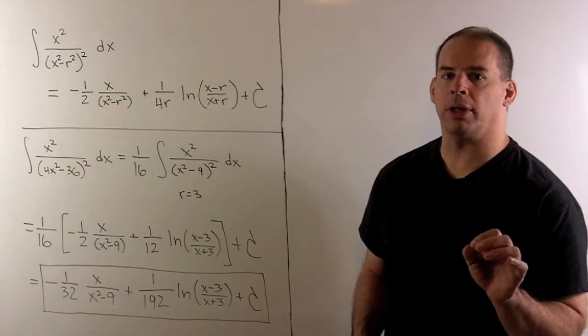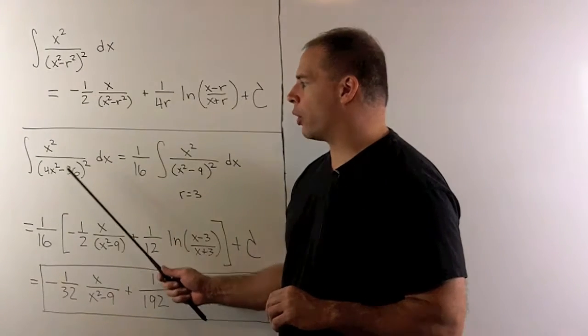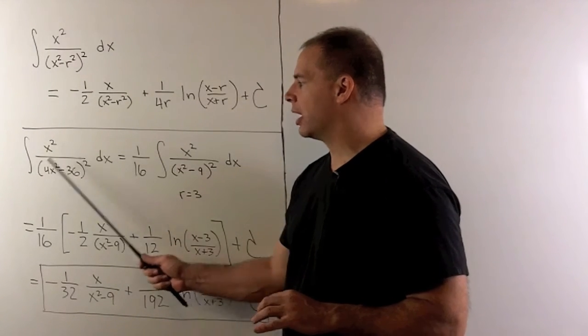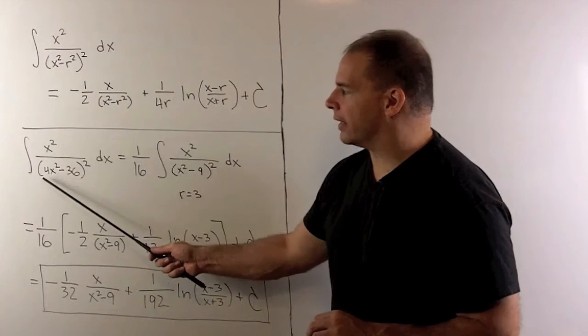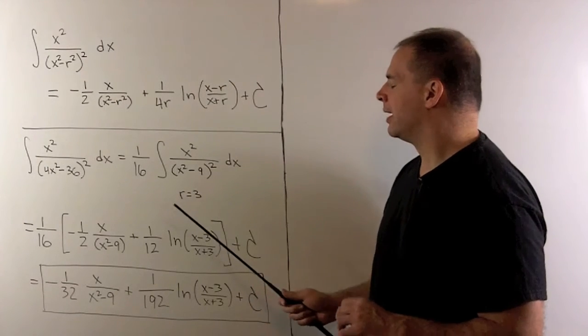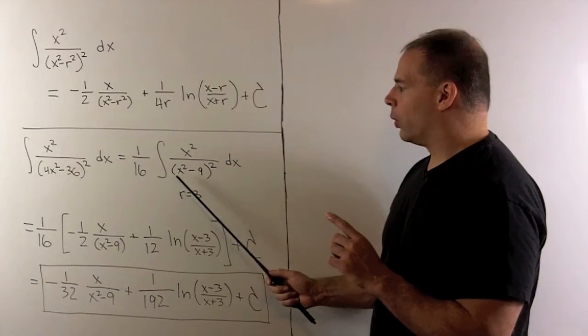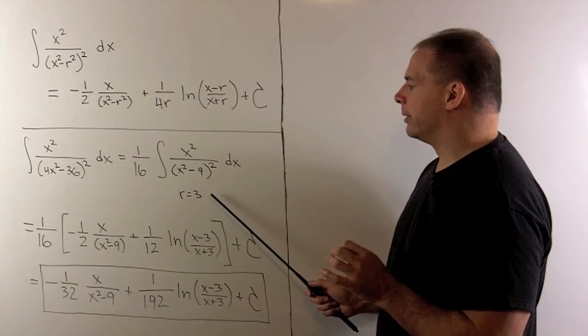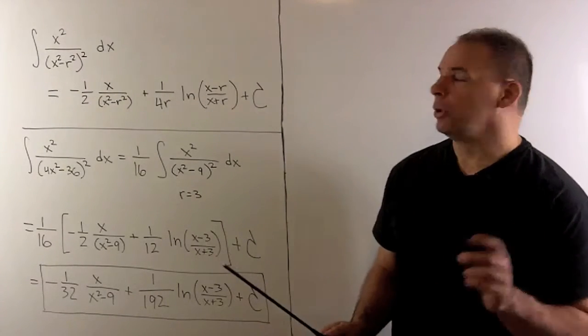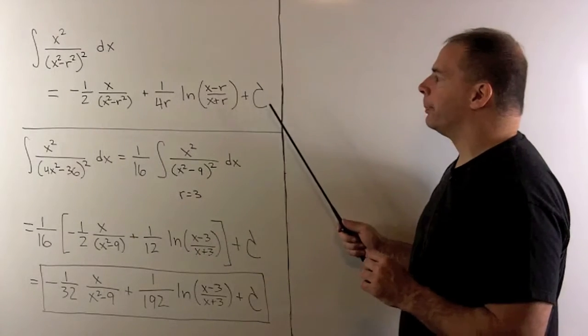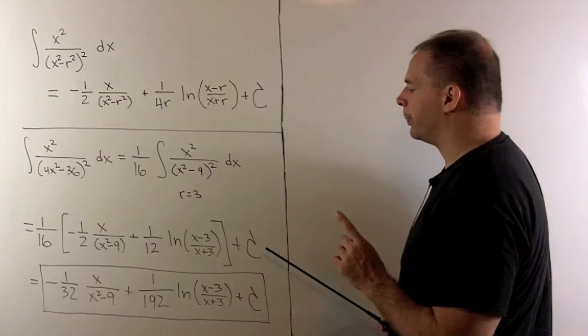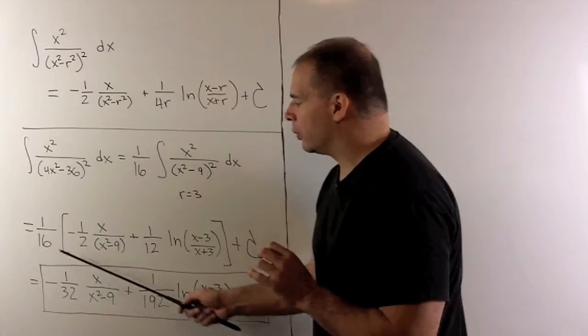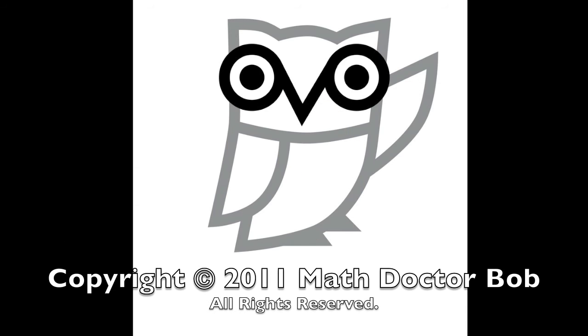Back to the original problem. We have the indefinite integral of x squared over 4x squared minus 36, quantity squared with respect to x. We factor 4 out of the denominator twice to get a 1 16th. Then with what's left over, we're going to set r equal to 3. Now we can go to the equation from the previous board. We're going to replace r with 3, so we get this expression here. When I simplify things, we get to our final answer. Thank you.